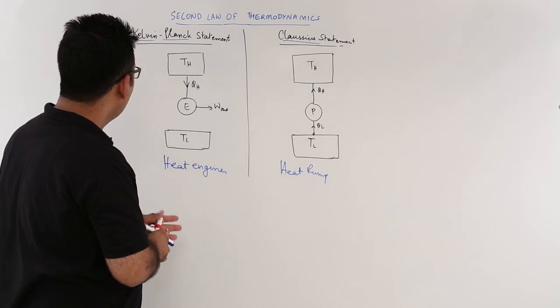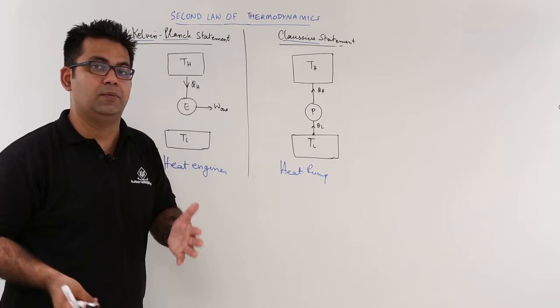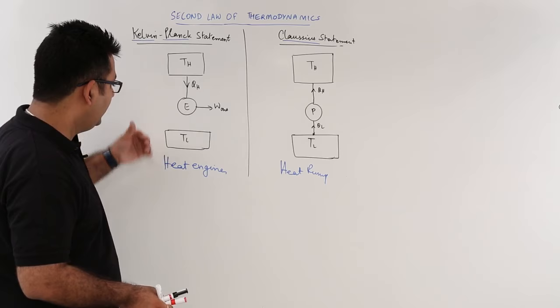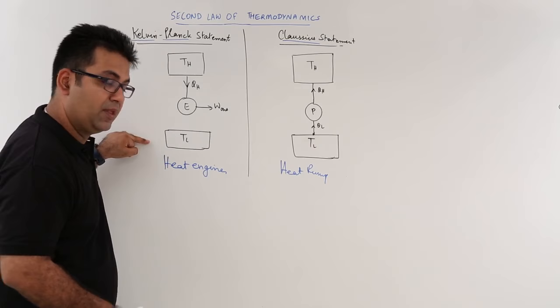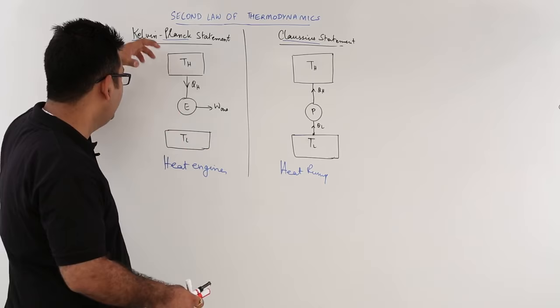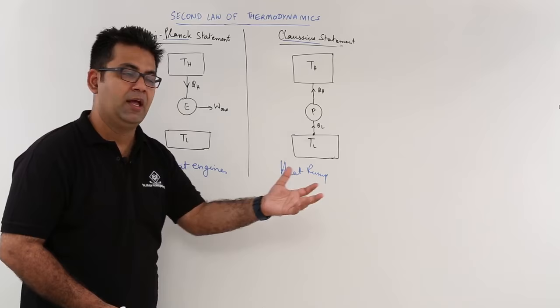Let's have a look at the Kelvin-Planck statement first. It's a very easy statement you can read about in the book, but I'll give you the understanding of it. When you have a heat engine, you have a high temperature source, a low temperature sink, and a heat engine in between. Your heat engine is absorbing some heat from that high temperature source and it converts some work output.